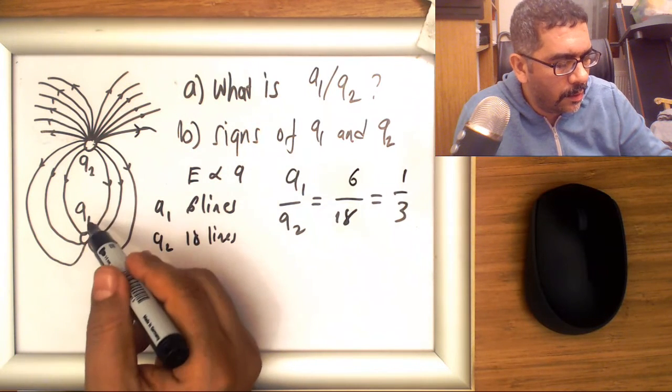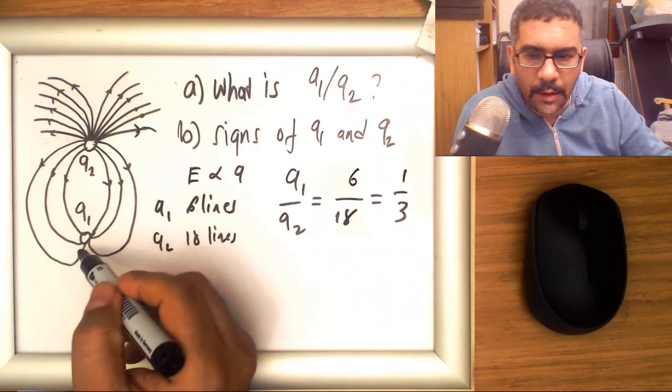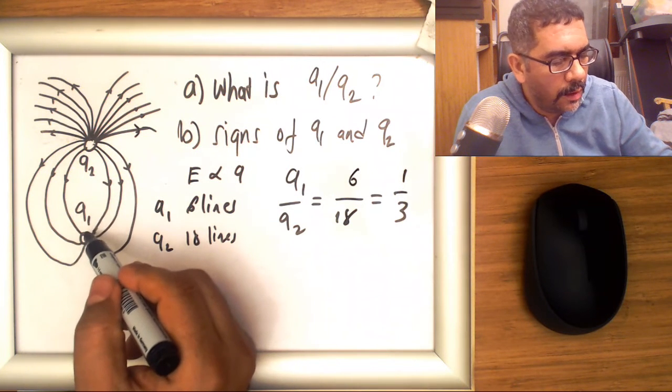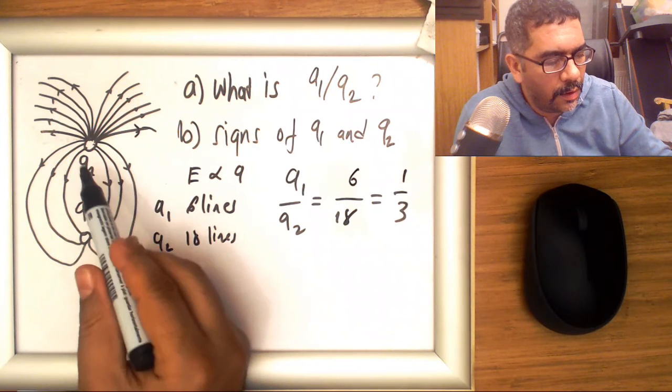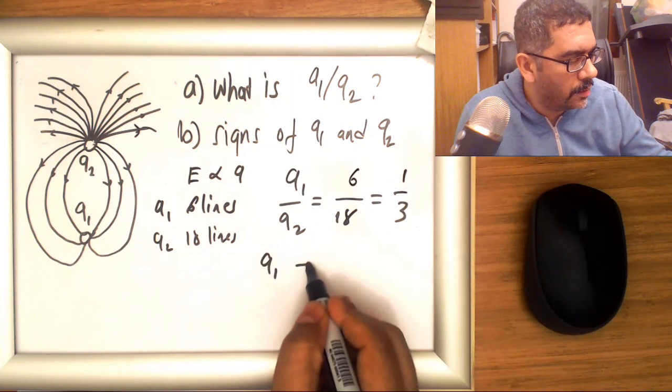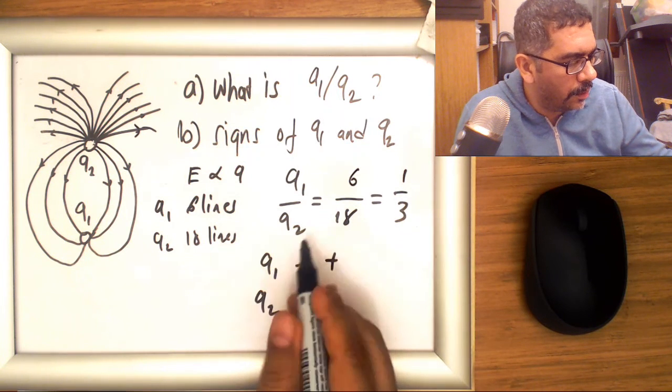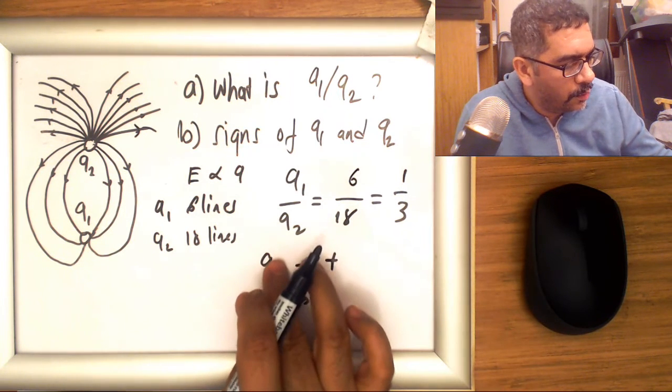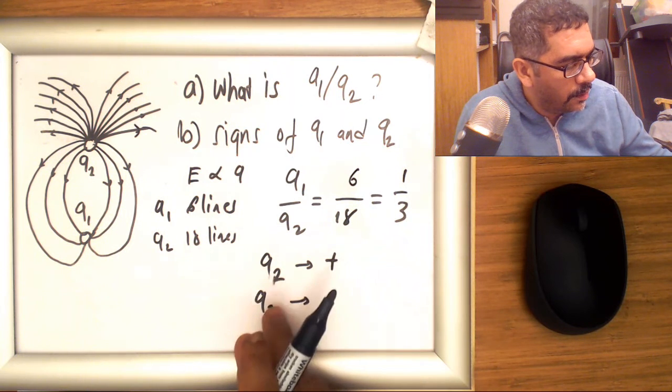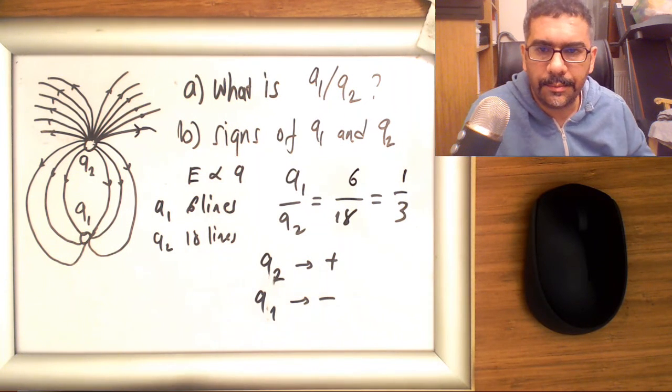q2, what you see is the electric field line directions are coming into q1. So that makes q1 a negative charge and q2 a positive charge. So q2 is positive and q1 is negative.